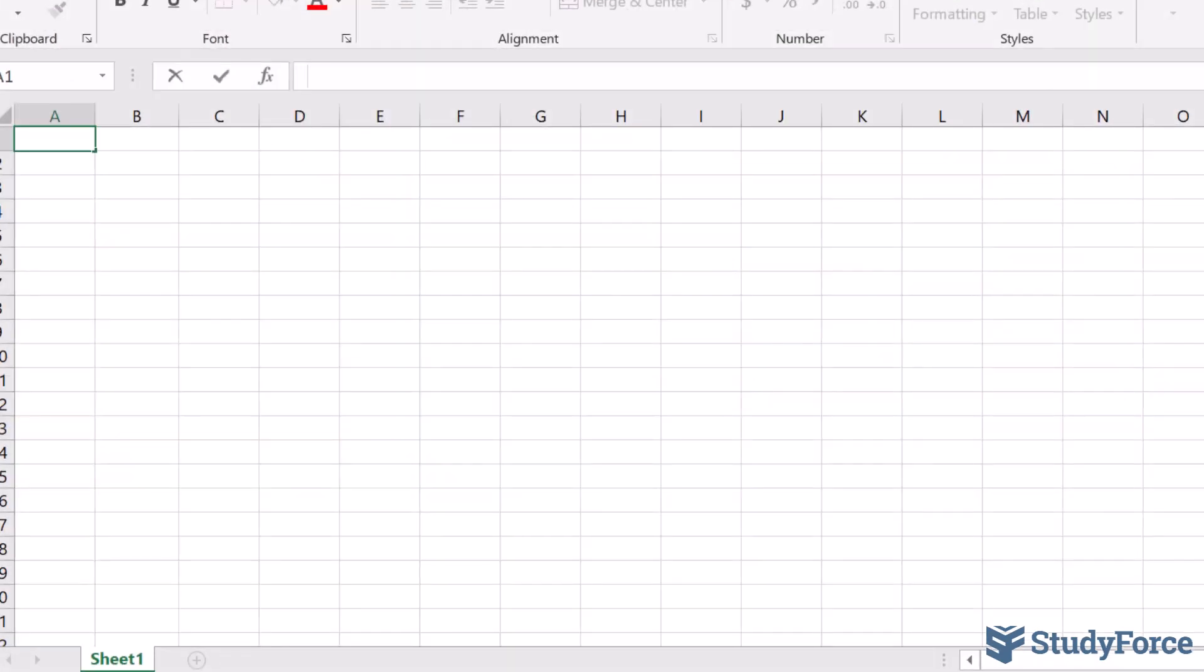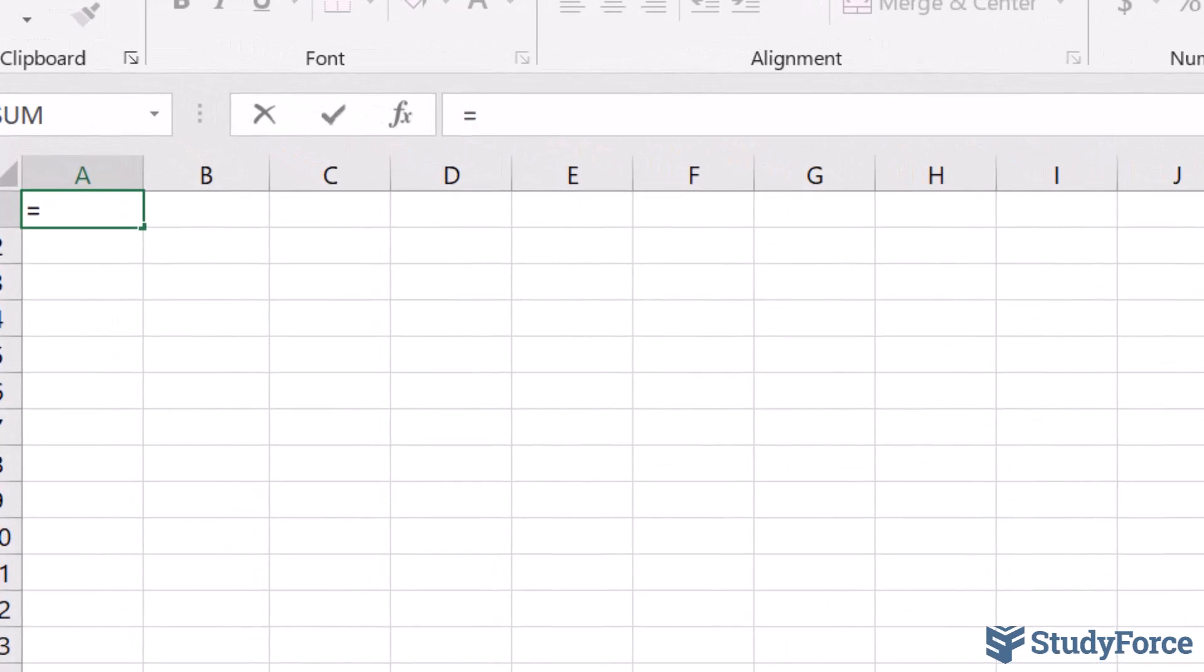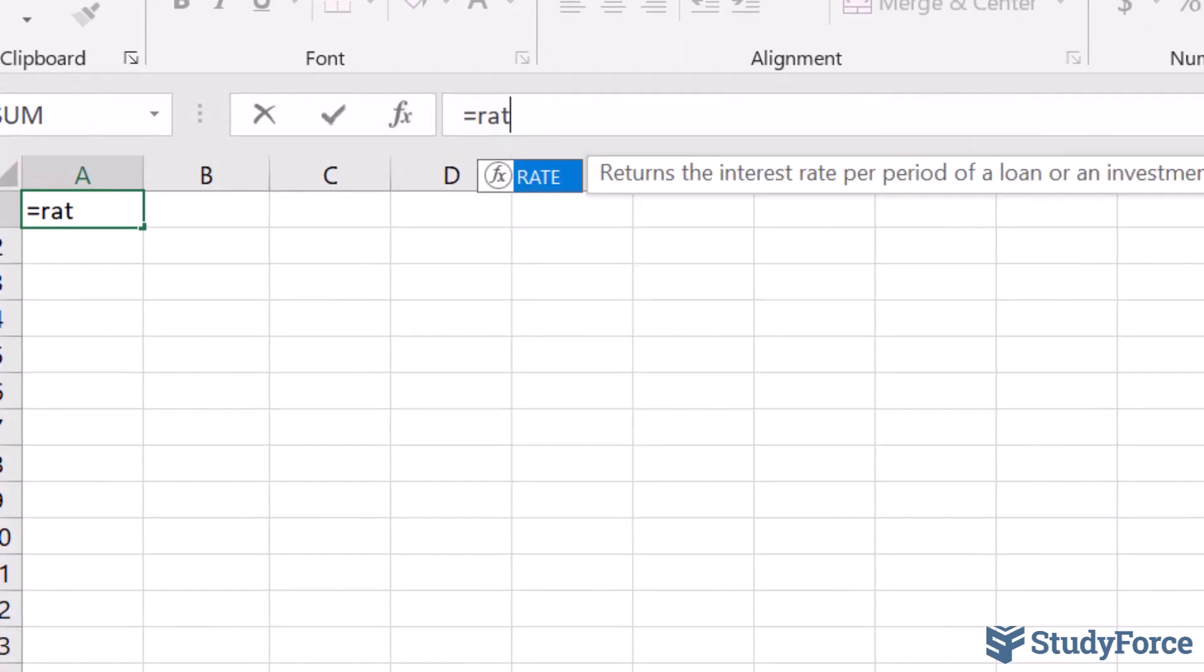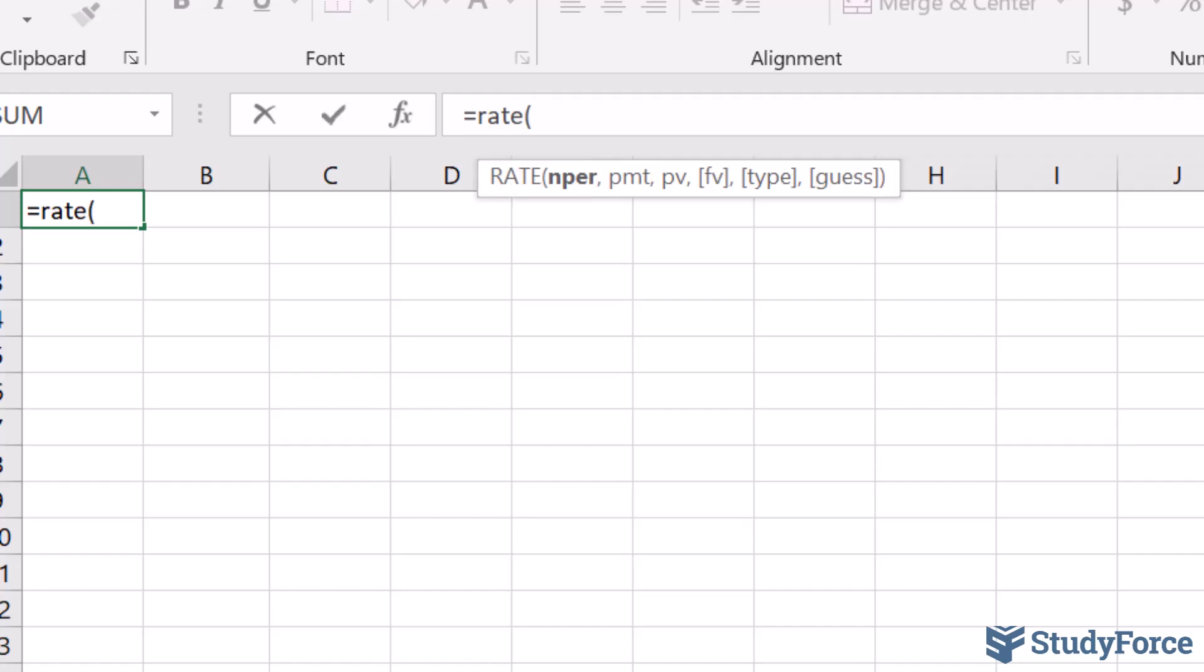Once the spreadsheet is open, click equals, followed by the word rate, R-A-T-E. Open up a parenthesis, and as soon as we do that, if you take a look, we have a function where the first variable in the function is NPER, which represents the number of periods. For us, it's 24.